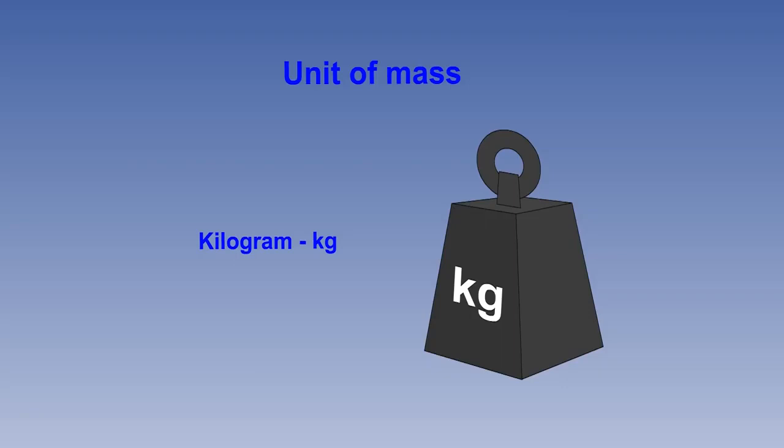Mass is the quantity of matter in a body. In aviation, the term body could mean a volume of liquid such as fuel, or gas such as air, or a solid object such as an aeroplane. In standard international SI units, mass is measured in kilograms, designated by the letters kg.